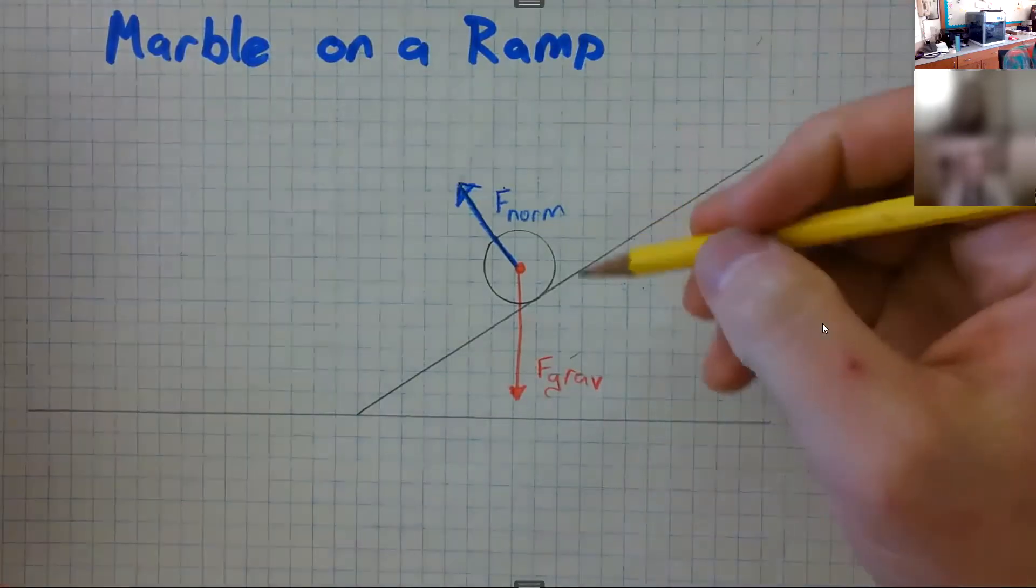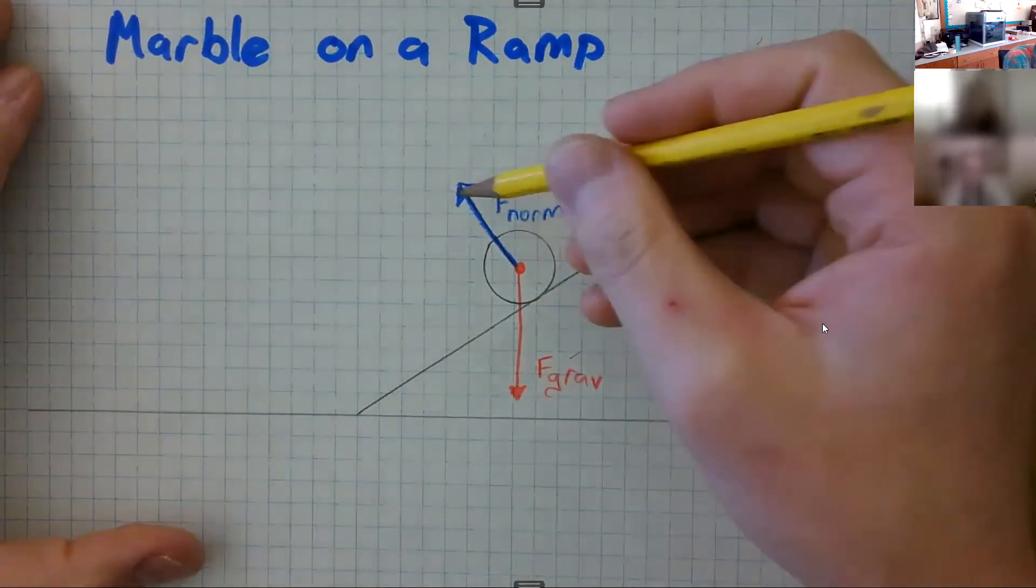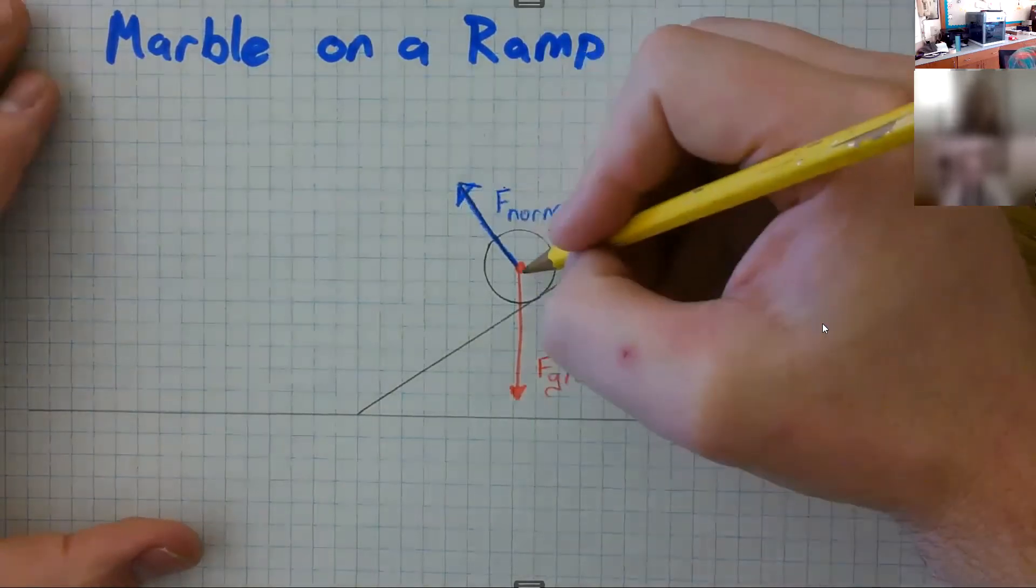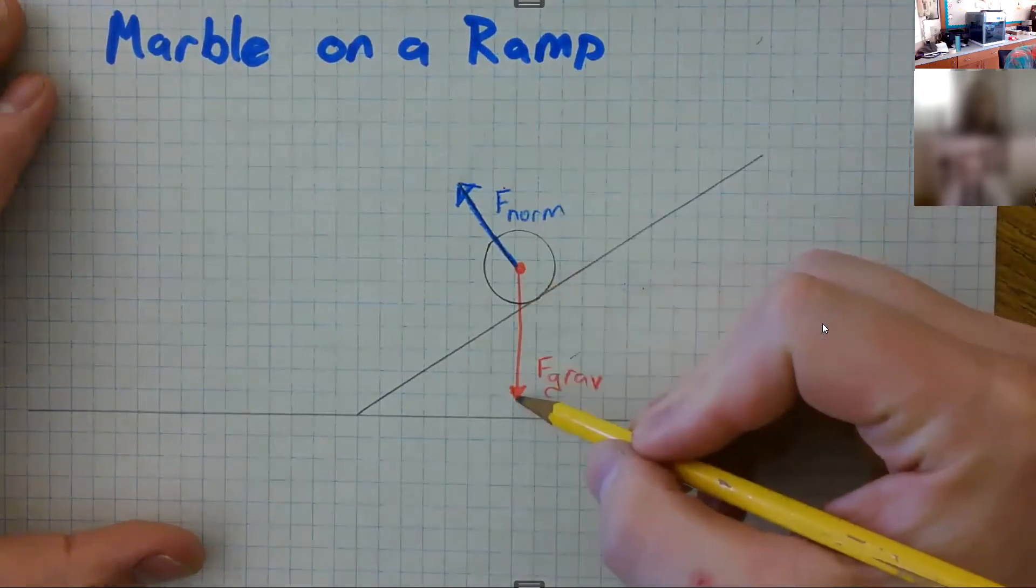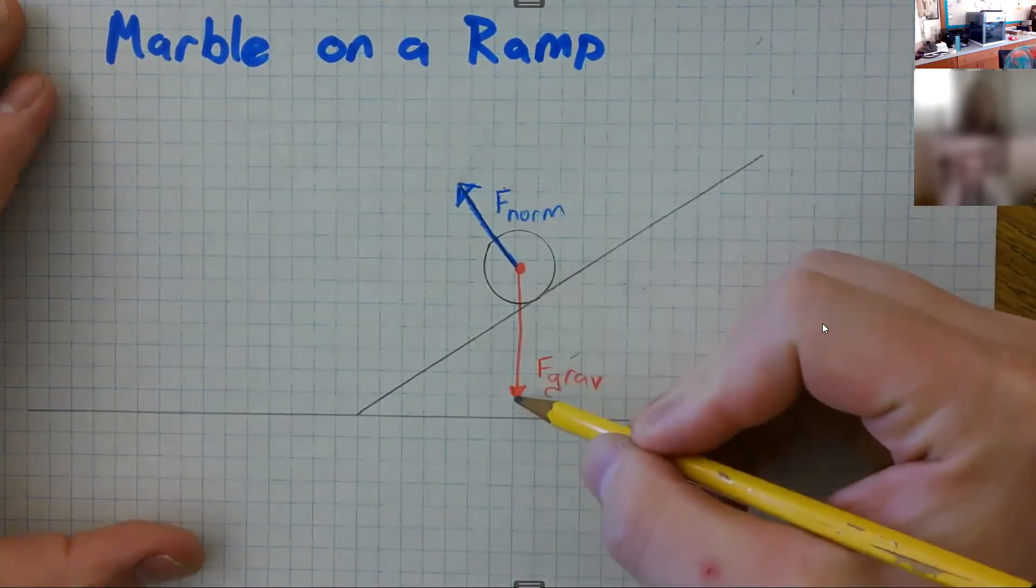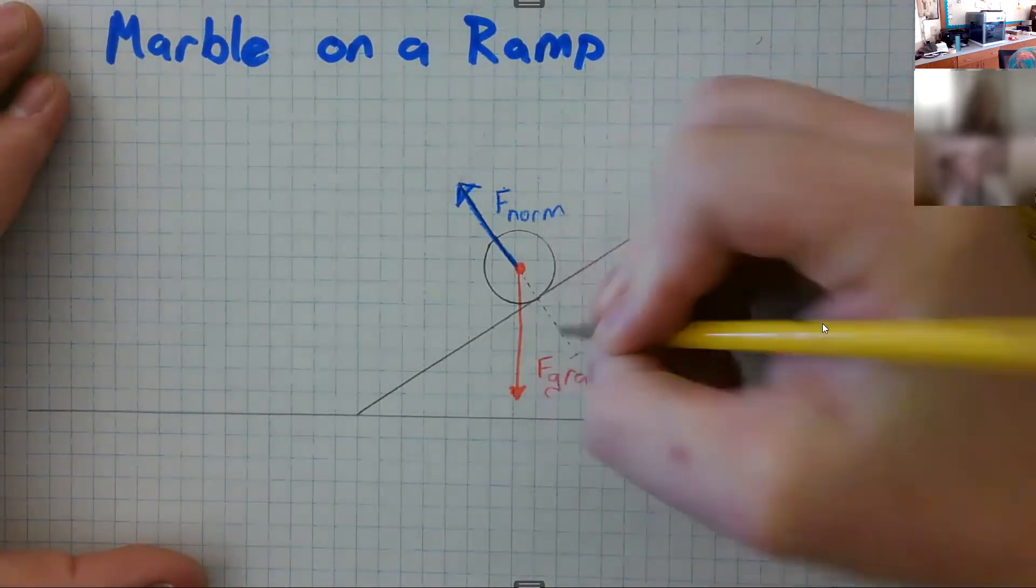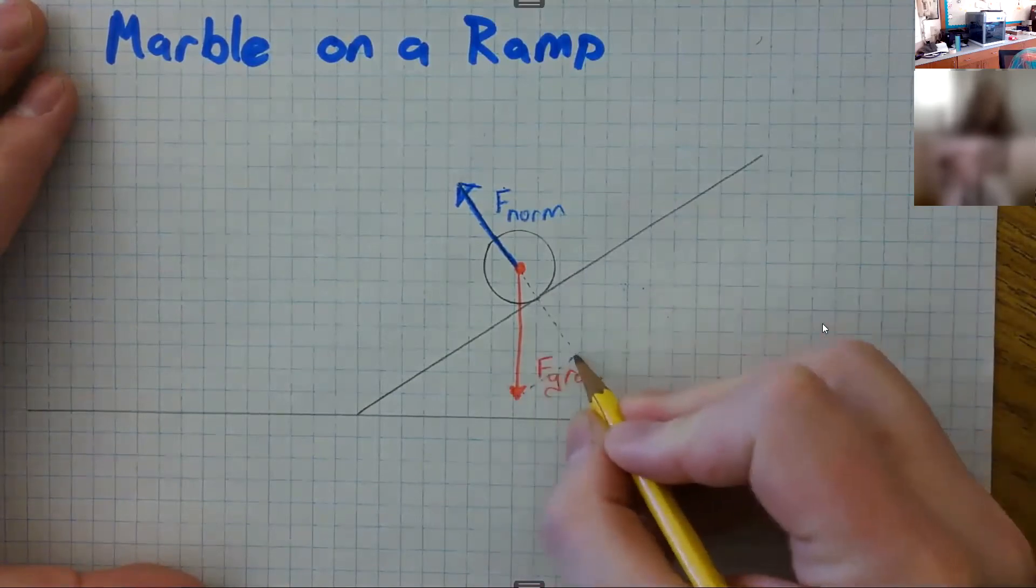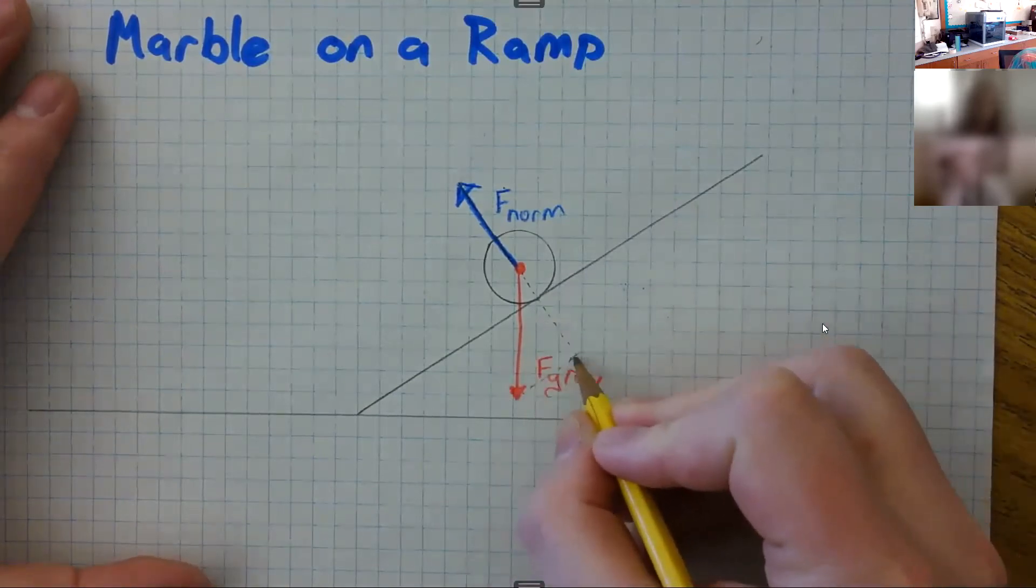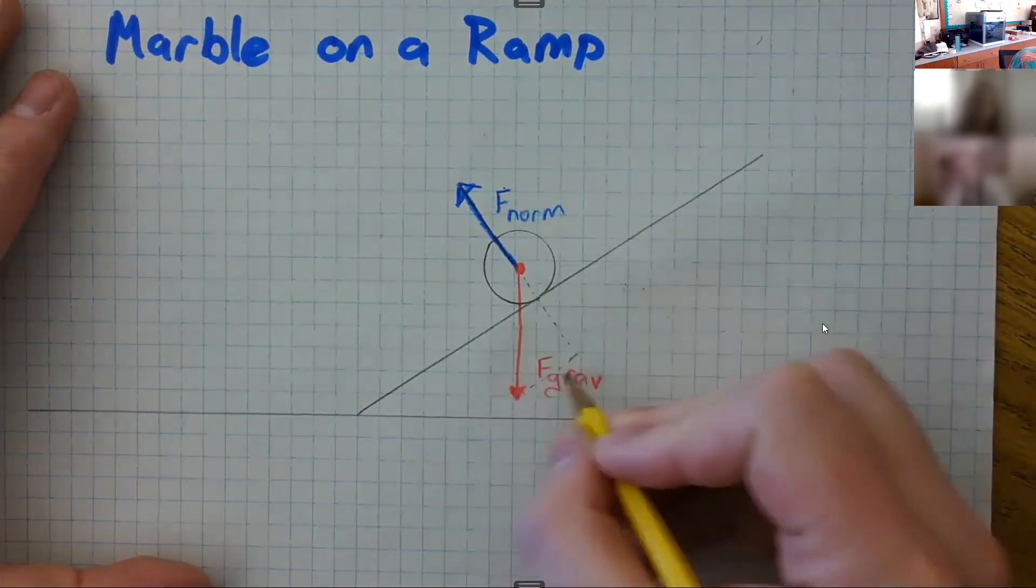And the way that we figure out the normal force at a diagonal is we have to make some right triangles. So the way we do that, we imagine that this gravity arrow, that that's the hypotenuse of a right triangle. So we draw down here a triangle which is perpendicular on one side to the ramp, parallel to the ramp on the other side, and that gives us our different components.